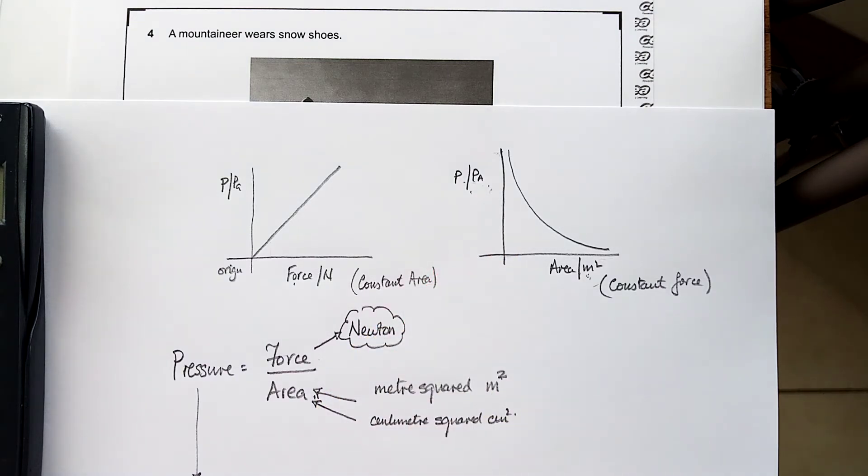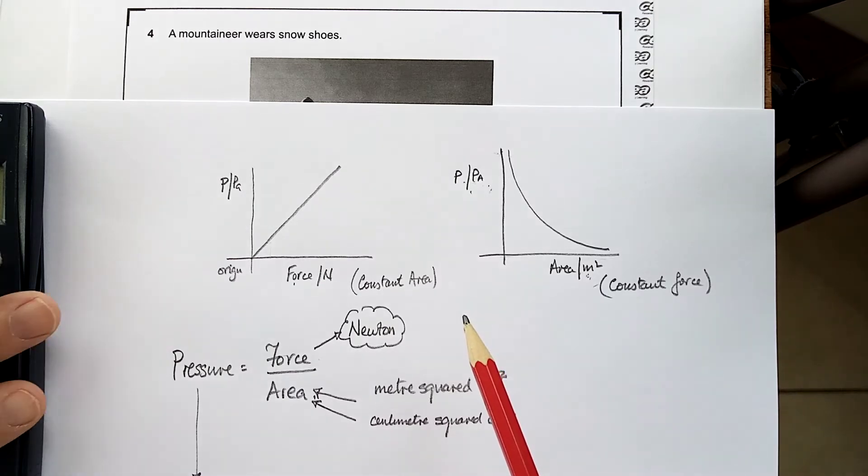So, that's about pressure. If you want to make the pressure small, big area. You want to make the pressure big, small area. Big area, tractor wheels, snowshoes, small pressure. Small area, knife edge, cheese cutter, big pressure. So, let's see, can we do the question.